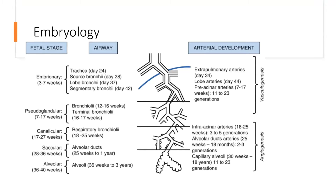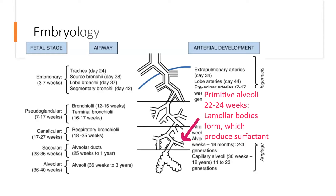Briefly on embryology: fetal lungs develop from the biggest airways down to the smallest. At 22 days the lungs have formed; by 34 days you can see a right and left sac. From about 3 to 7 weeks the bronchi form, then from 7 to 17 weeks the bronchioles and terminal bronchioles form. Then we get into the canalicular phase, roughly 17 to 27 weeks, which is really important from an antenatal corticosteroid perspective — this is where the respiratory bronchioles form, but also where the primitive alveoli form. From 22 to 24 weeks, lamellar bodies form and they're what produce surfactant.